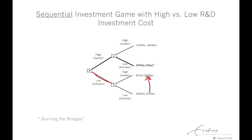Now consider the consequences if firm P chooses the high effort or leadership strategy. Firm S could respond with a high effort strategy, but that would result in a market share battle with a payoff of minus 100. In this case, firm S is forced to follow a low effort strategy, because 10 million is higher than minus 100 million. So the threat of a market share battle actually works in firm P's favour. Firm P receives either 100 million or 10 million, and the equilibrium strategy of firm P is to follow the leadership strategy.